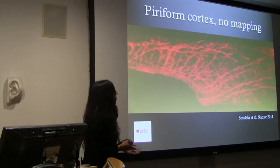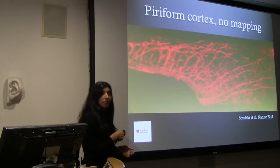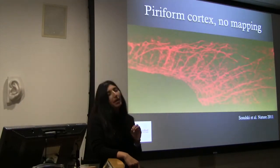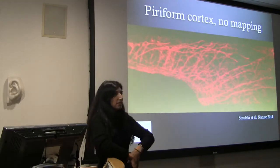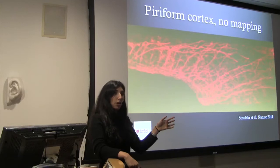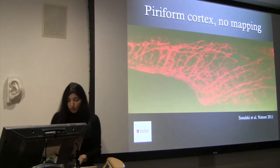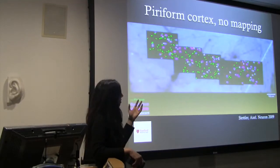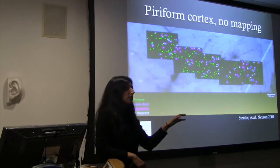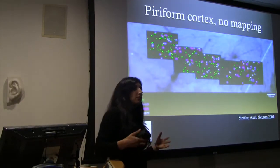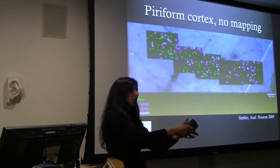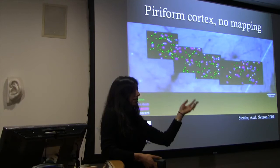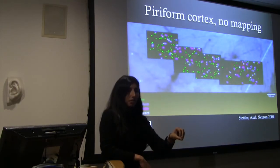Interestingly, if you look at the piriform cortex, there is no mapping — it just disappears. All those neurons that were carefully going from one spot to the other now have a seemingly random array of where they synapse in our cortex. But if you look at specific different types of olfactory receptor neurons, they are going to the same parts of the cortex. A particular smell of rain versus a dog versus a pizza may all be synapsing in the same area of your cortex.